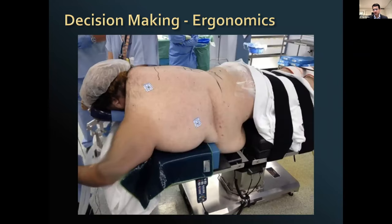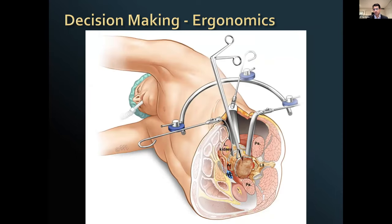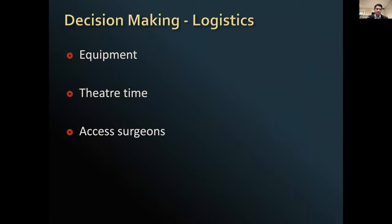Operating on a patient such as this carries many challenges — sometimes it's a compromise. This was something I approached from a posterior point of view, but sometimes a lateral approach might be better, where you can let the abdomen fall out of the way and get a more direct approach to the spine. Decision-making also involves logistics: what equipment you have, theatre time availability, and whether you need other surgeons to help with access.